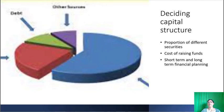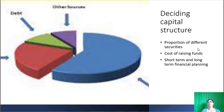Deciding capital structure: Capital structure refers to the kind and proportion of different securities for raising funds. A decision about various sources of funds should be linked to the cost of raising those funds — considering the share of equity, preference shares, debentures, bonds, and other borrowings. If the cost of raising funds is very high, such sources may not be useful for the long term. A decision about the kind of securities to be employed and the proportion in which these should be used is an important decision, as it will influence both the short-term and long-term financial planning of an enterprise.